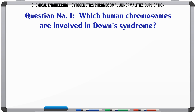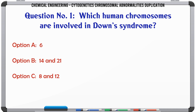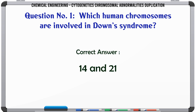Which human chromosomes are involved in Down syndrome? A: 6. B: 14 and 21. C: 8 and 12. D: X and Y. The correct answer is 14 and 21.